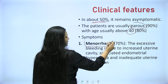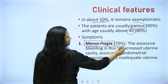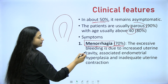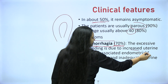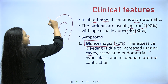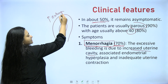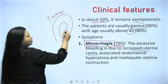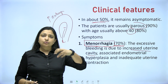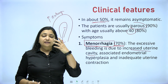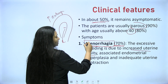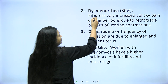Now, symptoms. Menorrhagia is very classic — 70% of patients will present with menorrhagia, heavy bleeding, because now the surface of the uterus has increased. The excessive bleeding is due to increased uterine cavity associated with endometrial hyperplasia and inadequate contractions, and the initial high estrogen effect. Increased cavity, increased bleeding, high hormones, hyperplasia, more bleeding — and because the uterus is now a thick, big structure, it will try to expel clots and there is heavy pain, dysmenorrhea during periods. Menorrhagia is very conspicuous as the main symptom, followed by dysmenorrhea.